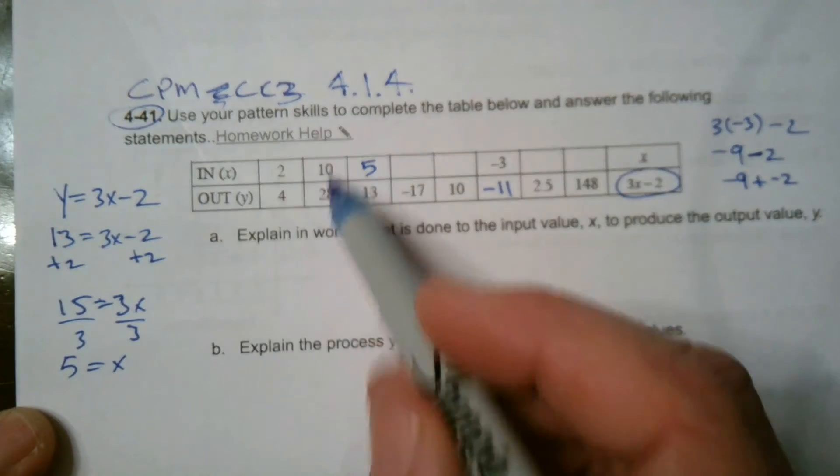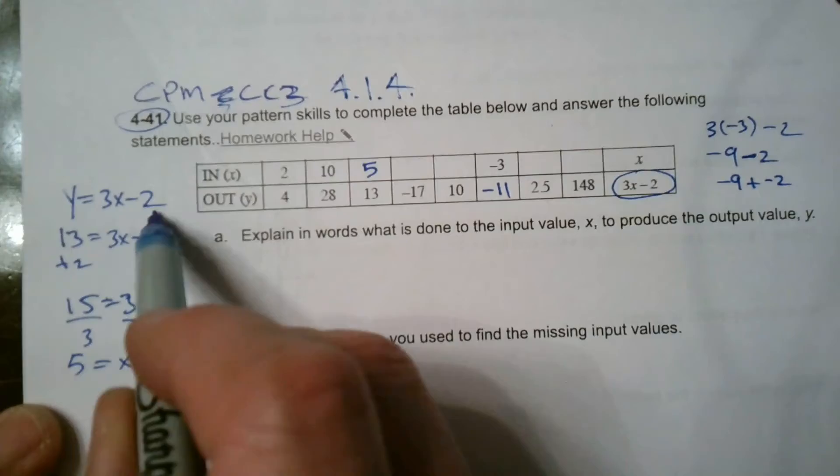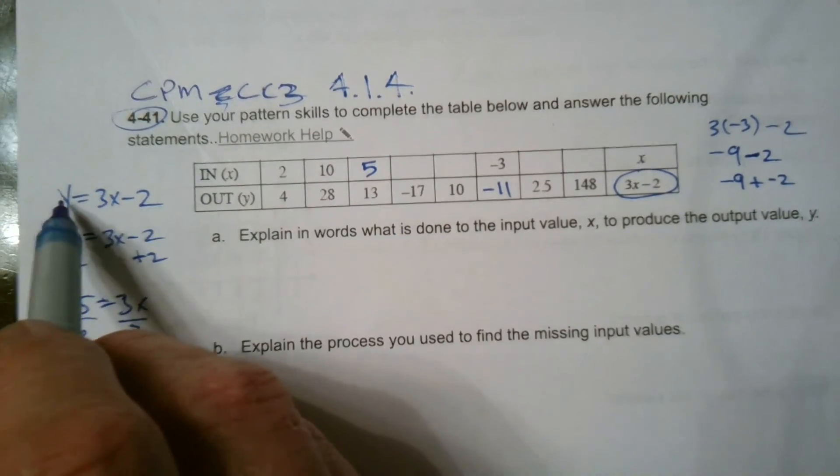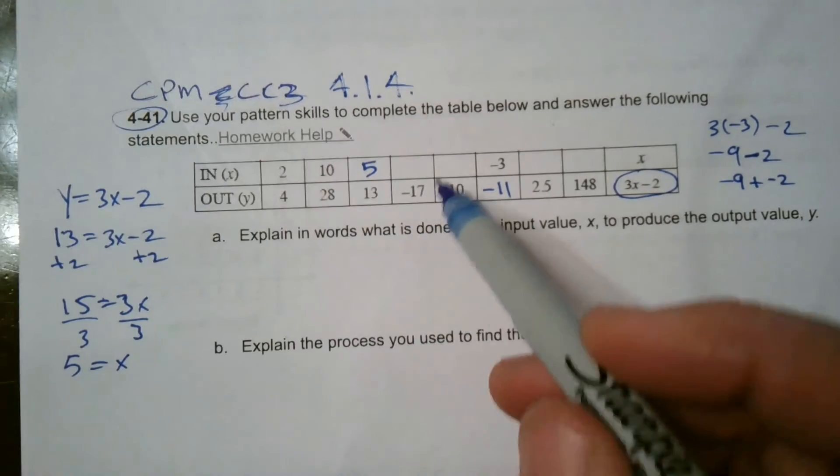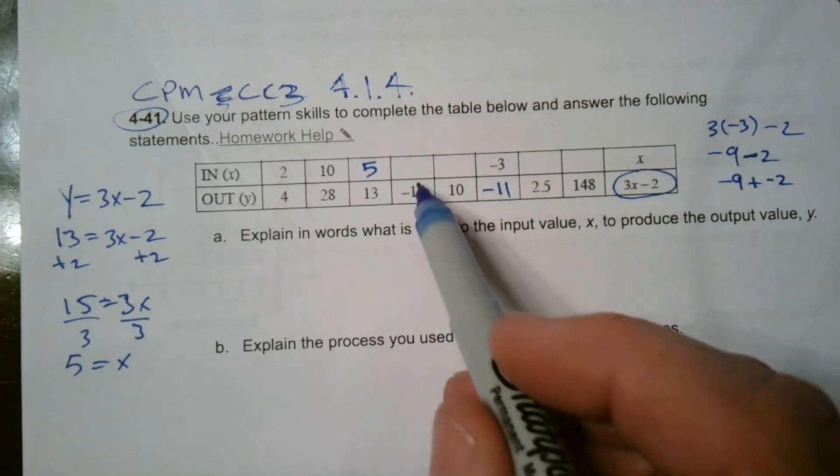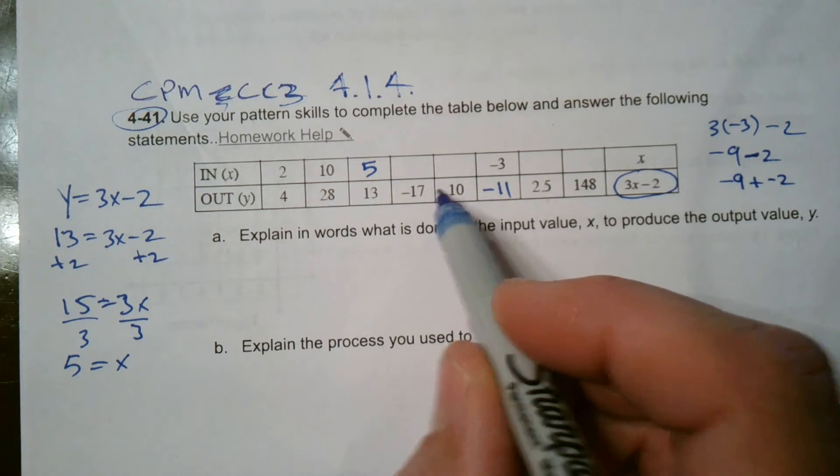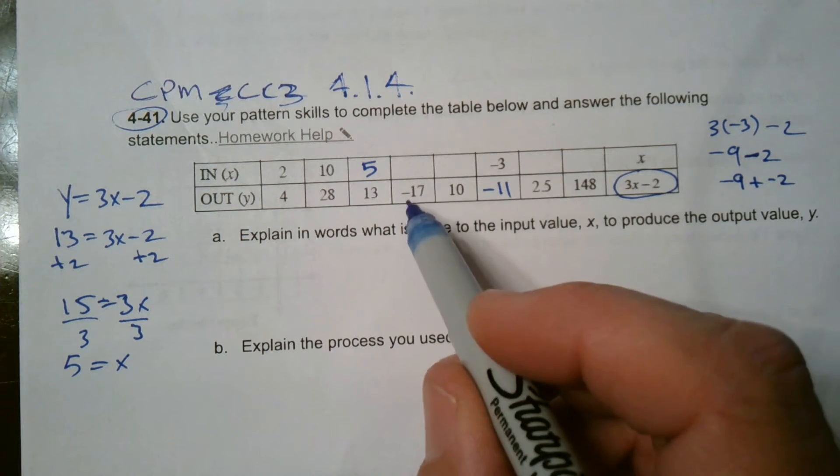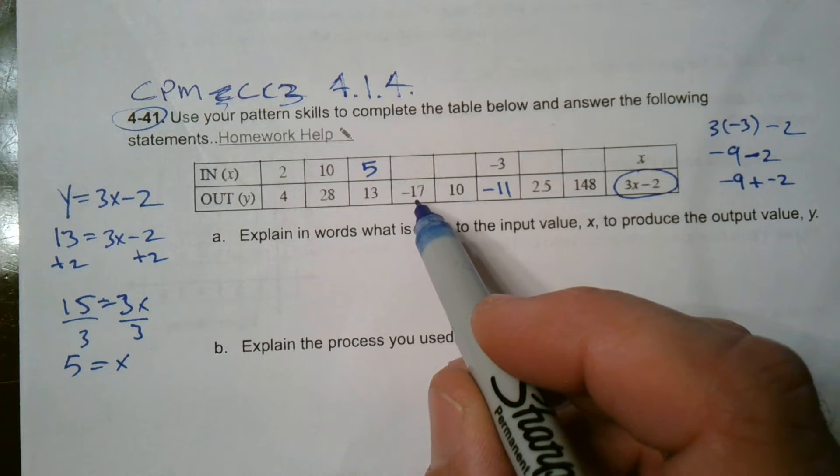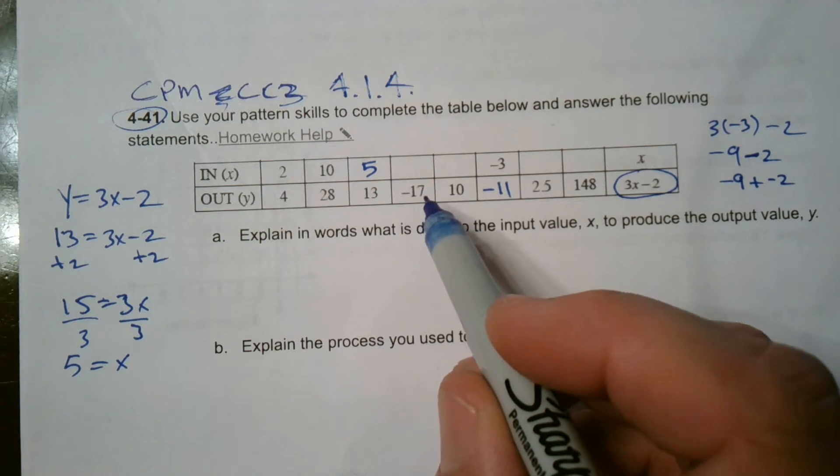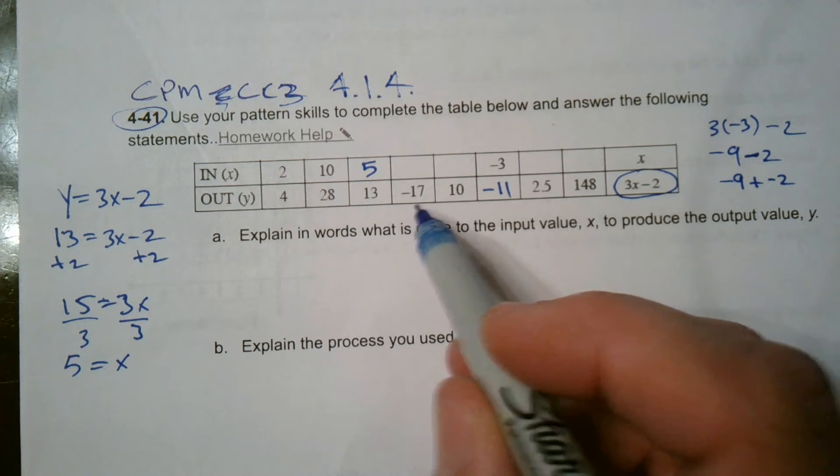So this is that idea of going backwards. So if we can think about this being my rule, I can plug in any Y and then solve for X to find the X. Or another way of thinking about it is just working backwards. So here's negative 17, and my rule is to subtract two. So let's add two. I'm going to work backwards to find out what X is. Add two. Negative 17 plus two is negative 15.